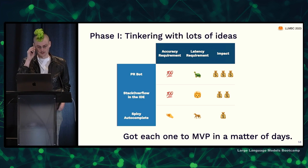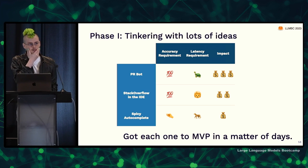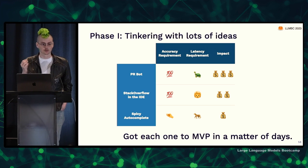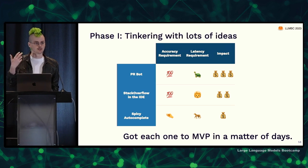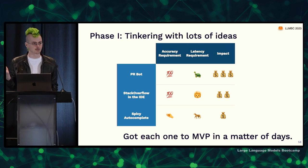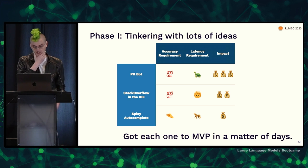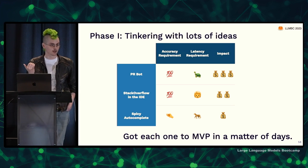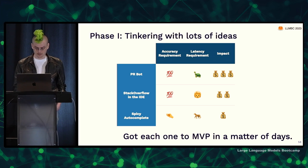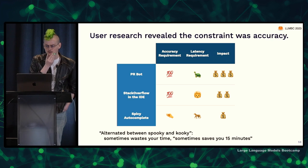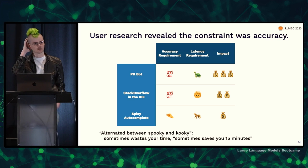The last thing they considered was just making a really good autocomplete. The big constraint is latency needs to be really, really low — people are typing and you need to generate suggestions at the scale of maybe milliseconds or a few hundred milliseconds. But you don't necessarily need high accuracy — people don't often accept autocomplete suggestions and they're fine with that. They got each of these to an MVP in a matter of days.